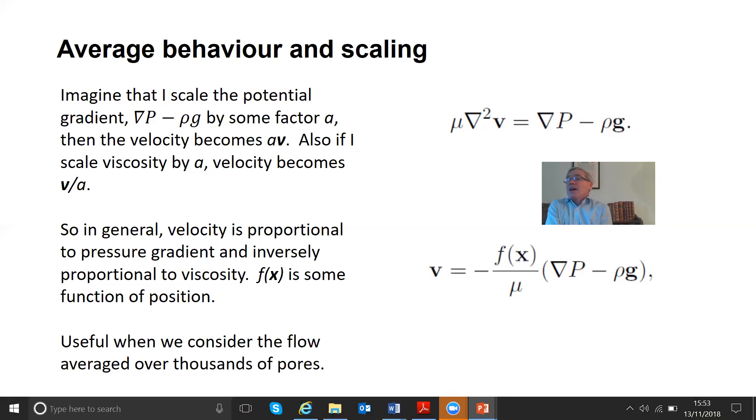So the first thing is, let's imagine I doubled the grad P minus rho g. So maybe I had horizontal flow, so I ignored gravity and I just pumped twice as hard. What's going to happen to the velocities? They all double, don't they? In fact, if you just look at the equation, there's a linear relation. It's linear. So if I scale the pressure gradient by a, or the potential grad P minus rho g term by a, then the velocity just scales by a. Similarly with viscosity, if I double the viscosity, then the velocity is half, right? So it's inverse. So the velocity is essentially inversely proportional to viscosity and proportional to this forcing term. Now that doesn't really get us anywhere, because then in between is some complex function of location x, some function of position which we don't know and is going to be controlled by the pore structure.